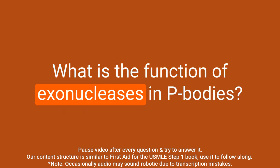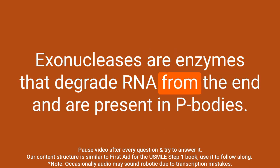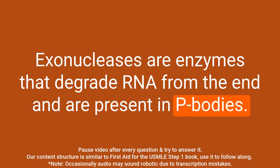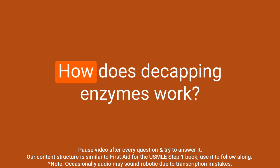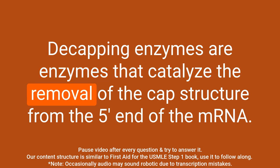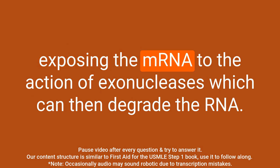Question: What is the function of exonucleases in P bodies? Answer: Exonucleases are enzymes that degrade RNA from the end and are present in P bodies. They play a role in the degradation of mRNAs targeted for destruction by removing the cap and tail of the mRNA, thereby making it a substrate for other exonucleases. Question: How do decapping enzymes work? Answer: Decapping enzymes catalyze the removal of the cap structure from the 5' end of the mRNA. They work by hydrolyzing the bond between the cap structure and the rest of the mRNA, releasing the cap and exposing the mRNA to the action of exonucleases, which can then degrade the RNA.